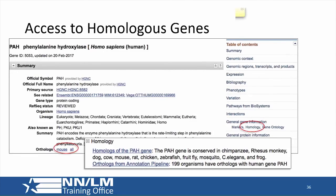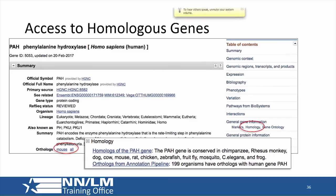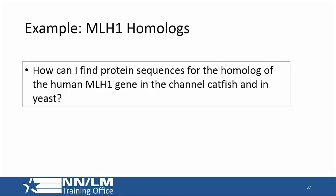In the gene record, there is a homology section with links to orthologues. There's also a shortcut on the left-hand side below the gene summary giving access to the mouse homolog or all orthologues identified by the genome annotation pipeline. The last question is: how can I find protein sequences for the homologs of the human MLH1 gene in channel catfish and in yeast?